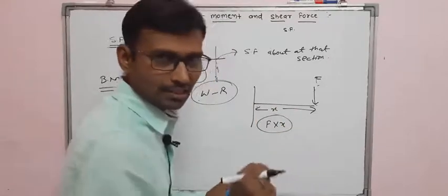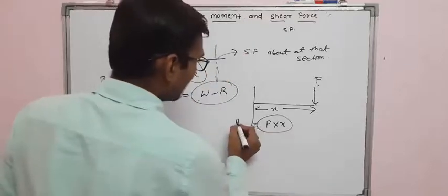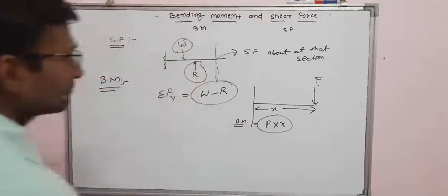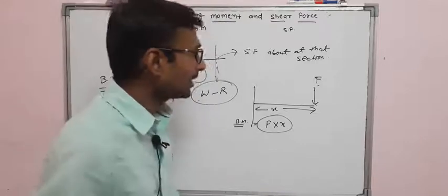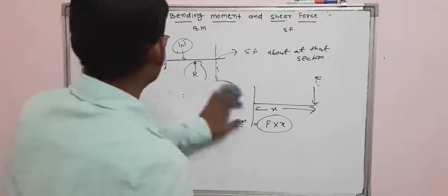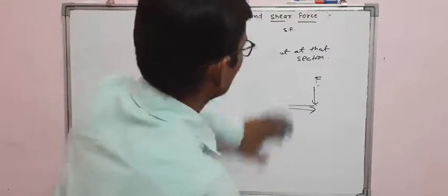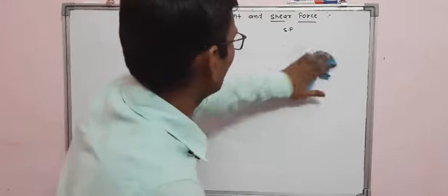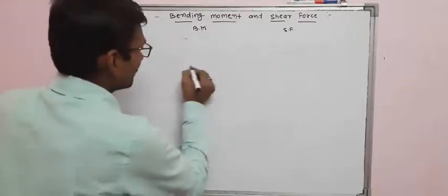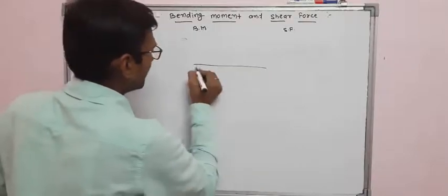The direction of the bending moment is the next important concept. How to find the direction of the moment — this can be a difficult step. Let us take the example of a simply supported beam to understand the direction.